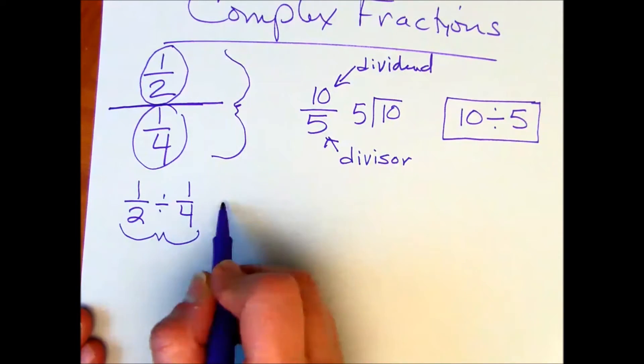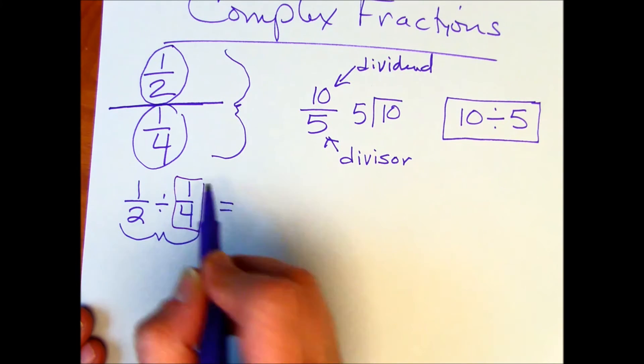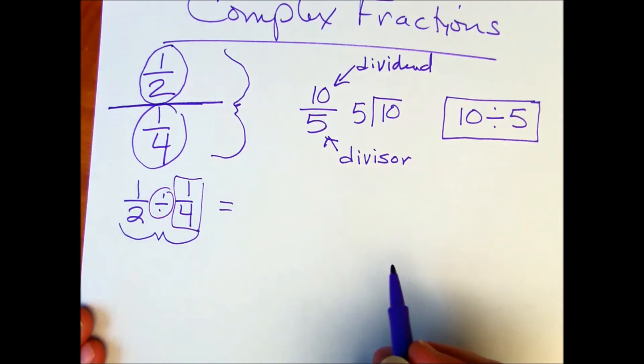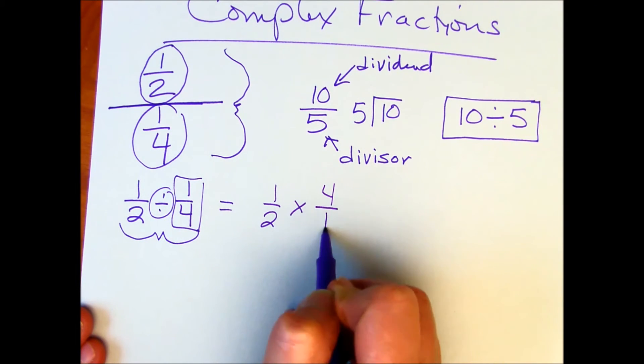All right, let's go ahead and divide. So remember, we're going to flip the second and then change the operation to multiplication. So that's one-half times four over one.